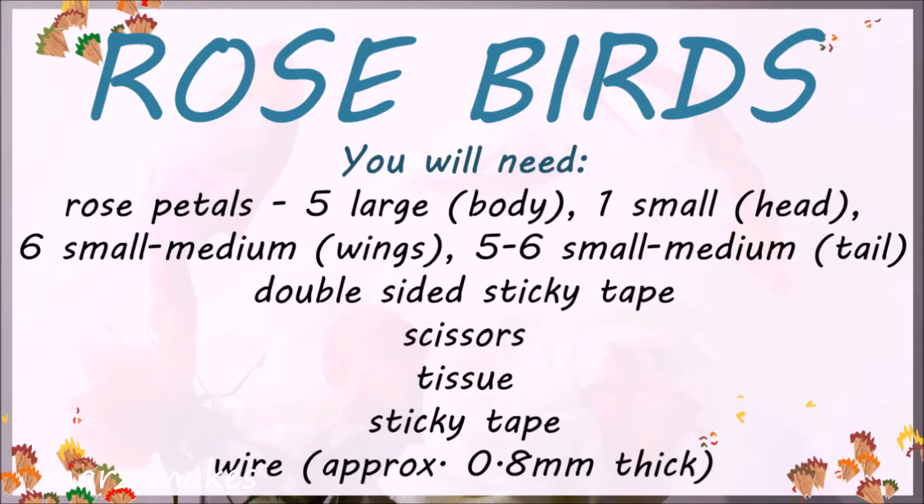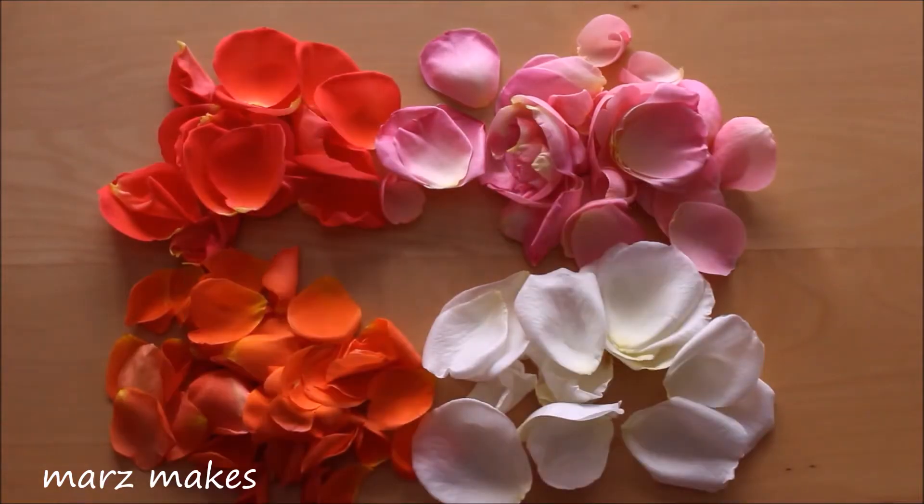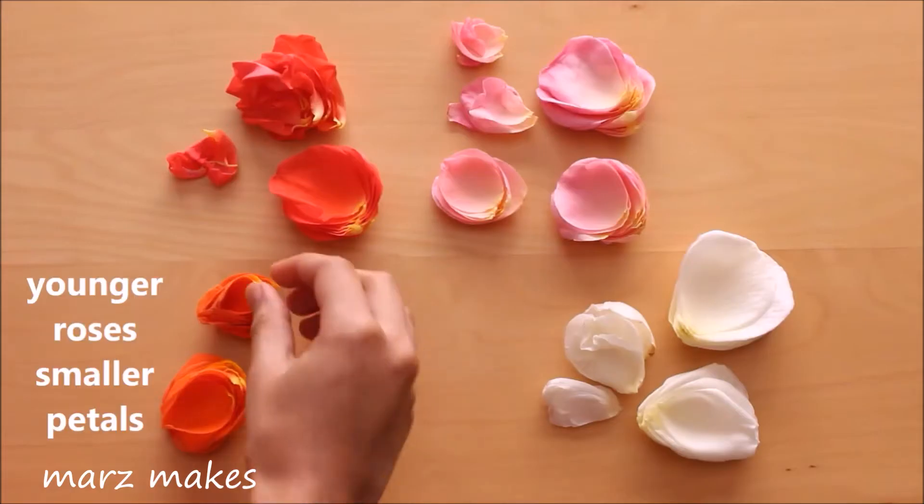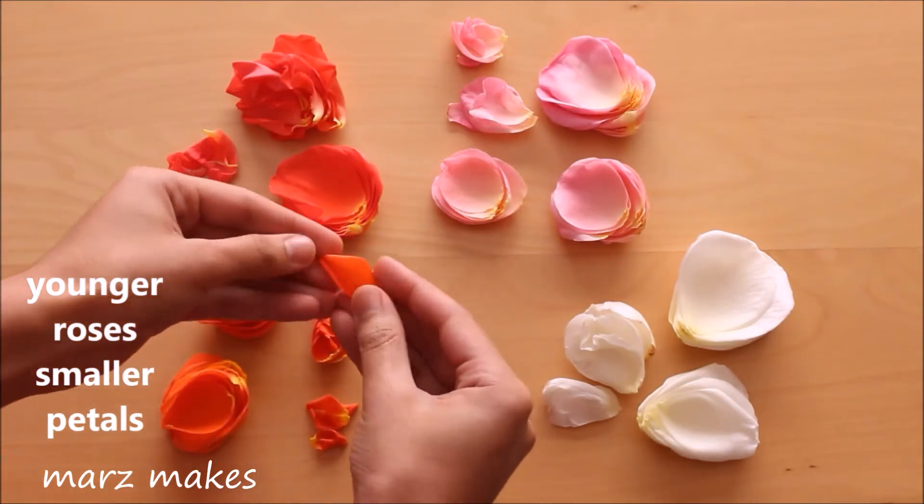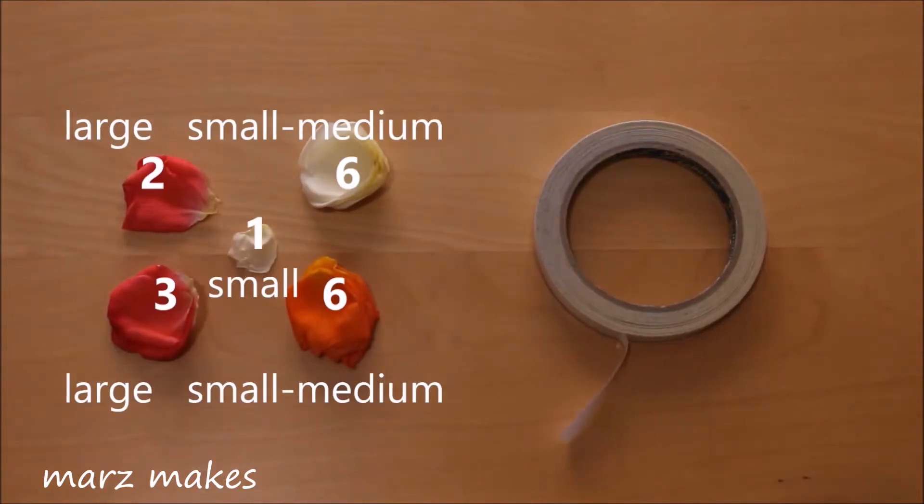To start, I'm plucking the petals off the roses carefully and one by one so that they don't break. Smaller petals are needed for the head and younger roses give smaller petals, but sometimes the inner petals of larger roses can be quite small.